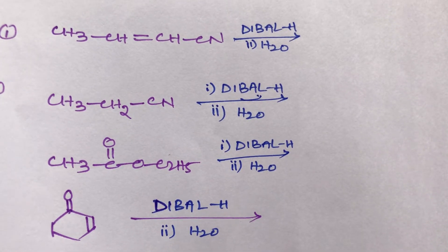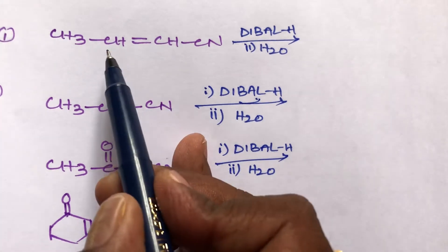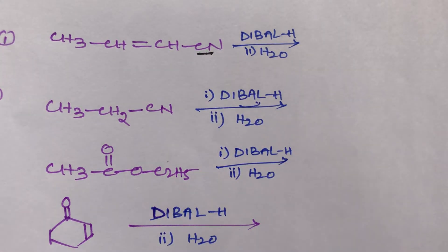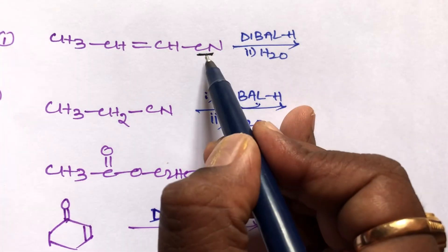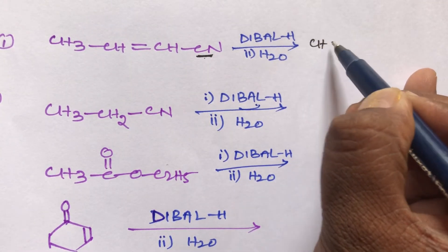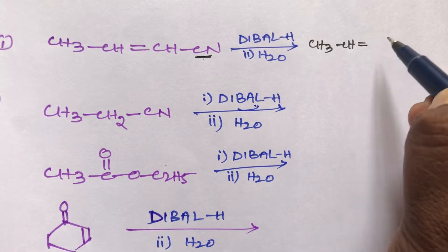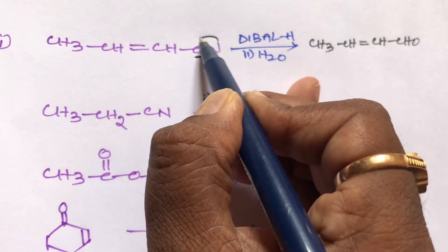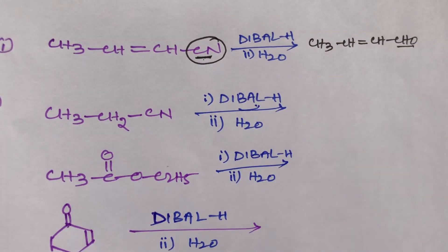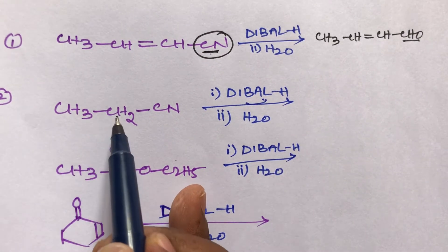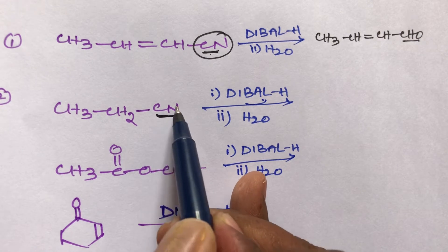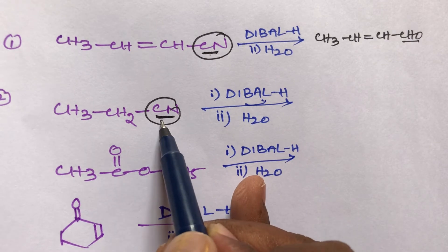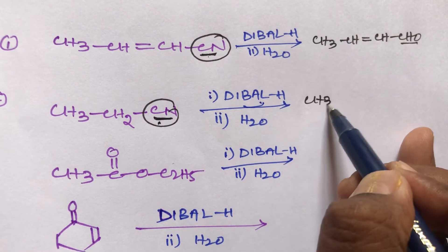Hello students, next continuation: solve the following application. First one — this compound reacts with DIBAL in the presence of water. Here a cyanogroup is present. Diisobutylaluminum hydride (DIBAL) can reduce only the cyanogroup; it cannot reduce the double bond. So the product is CH3-CH=CH-CHO — the cyanogroup is converted into an aldehyde.